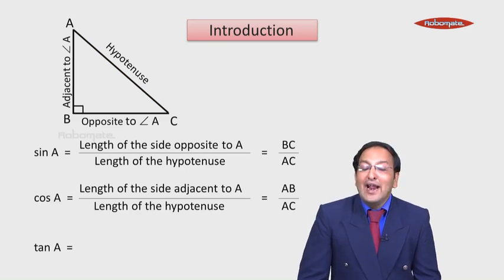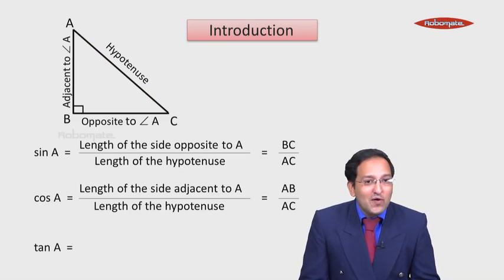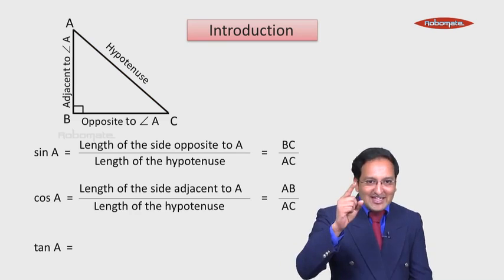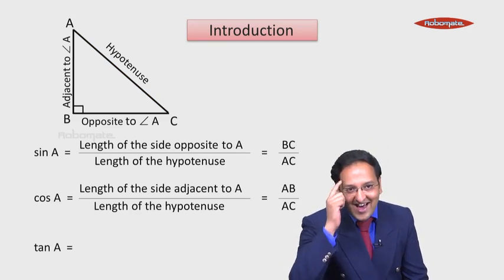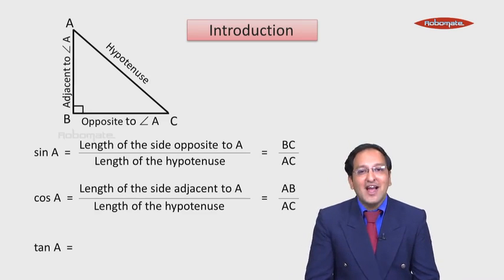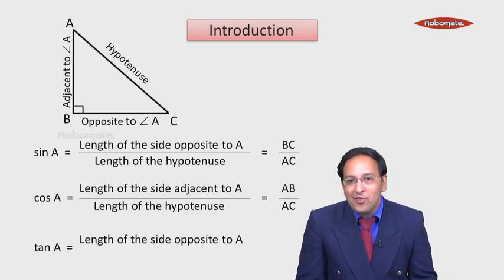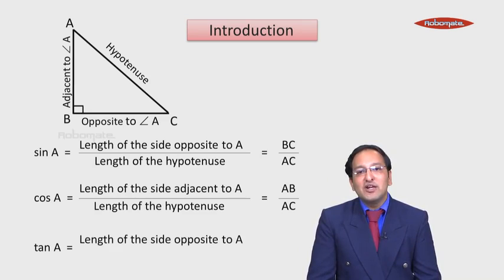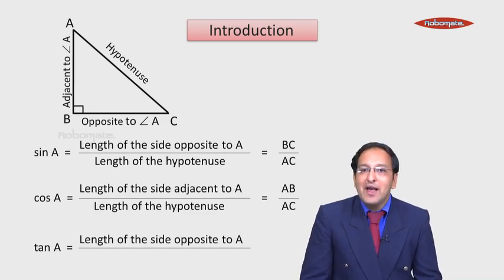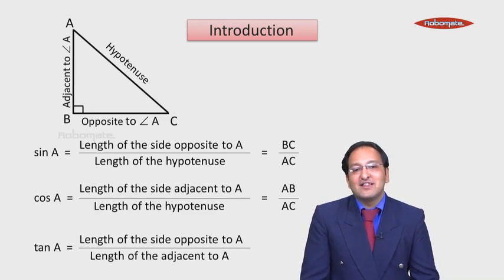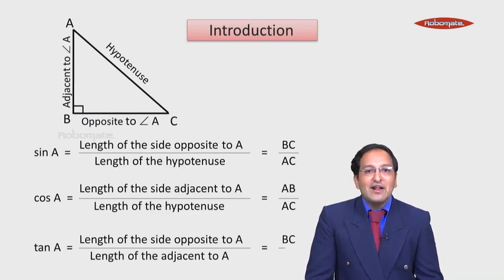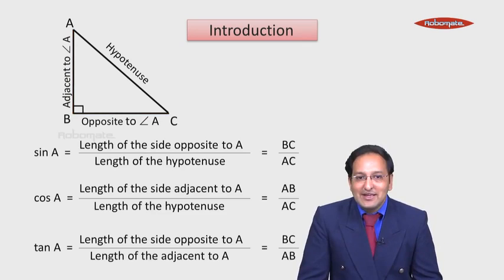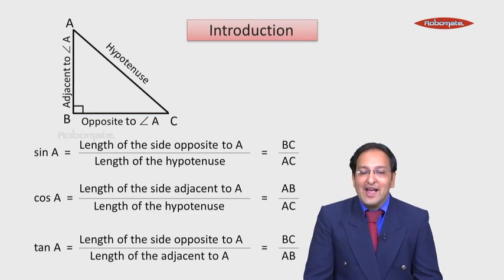Next is tan A. Tan A is sin A upon cos A. So tan A equals the length of the side opposite to A divided by the length of the side adjacent to A, which is BC divided by AB.